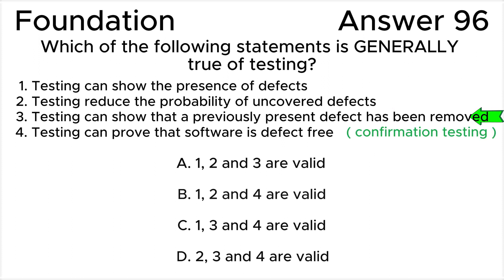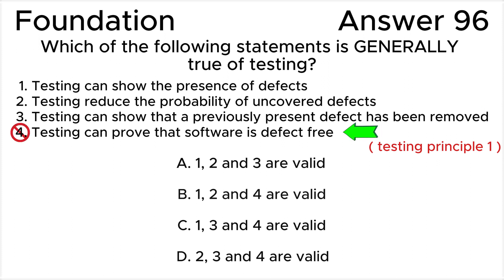Statement three is valid — testing can demonstrate that a defect, once identified, has been fixed or removed. This is called confirmation testing, according to the ISTQB glossary. Statement four is invalid — testing cannot prove that software is defect free; it can only provide information about the presence of defects that have been identified during testing.